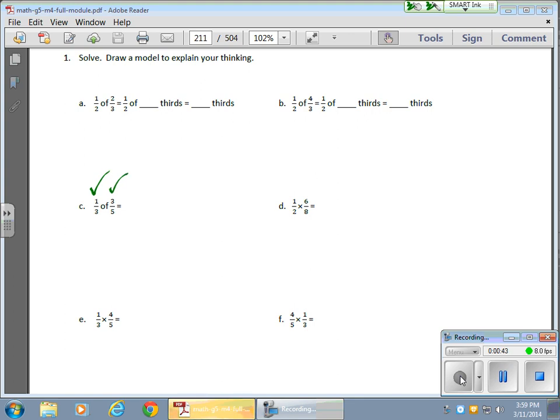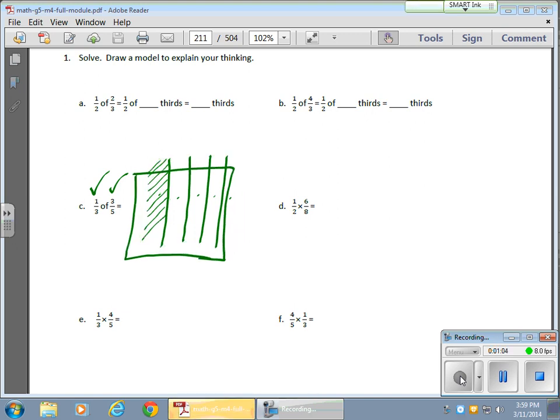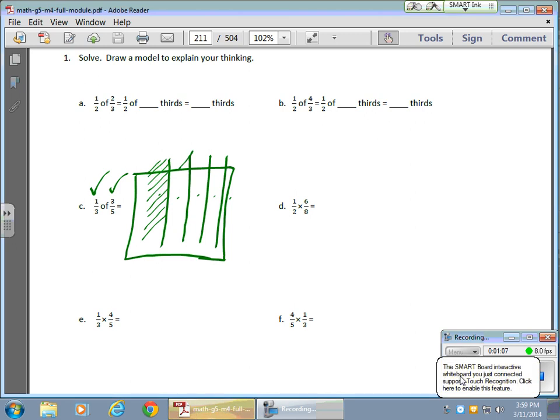So what we want to do here is take one-third of 3 fifths. I can start my area model with a nice big square, and I want to turn this into, or show, 3 fifths. So I have 1, 2, 3, 4, 5 parts, and I need to shade in. I'm going to go in one direction. I'm going to shade in. Oh, a little technical issue here. Hang on. Let me try that again.